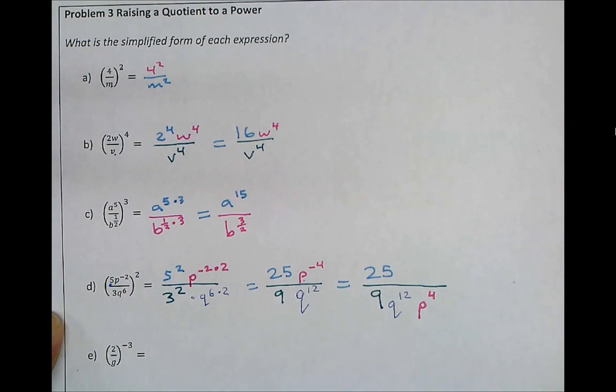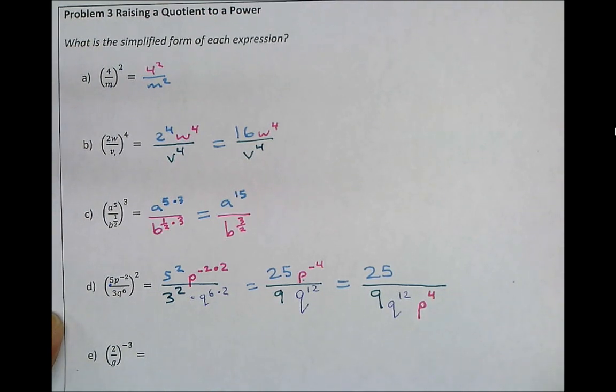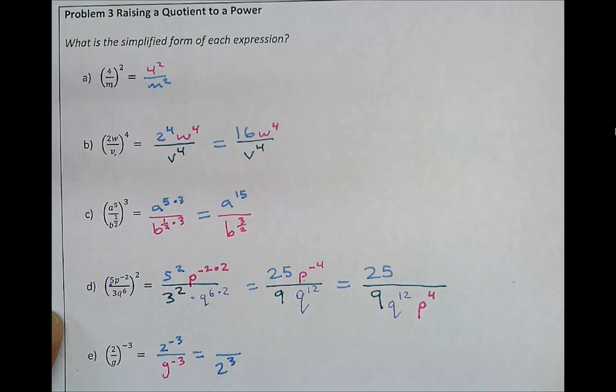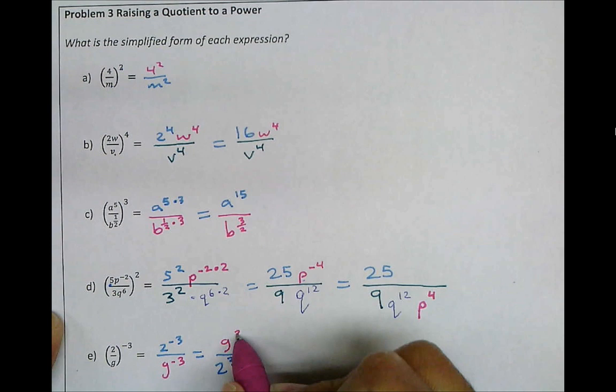Lastly, there are two ways we can do this problem. Let's start with the method we've been using up until now. 2 is raised to the power of negative 3. And g is also raised to the power of negative 3. Because these are both negative exponents, we need to move them to make them positive exponents. So first, this power drops into the denominator to make it a positive 3. And this power moves into the numerator to make it a positive 3.